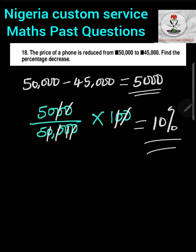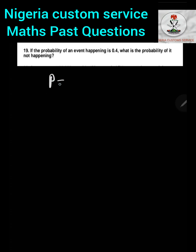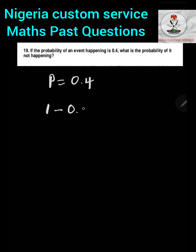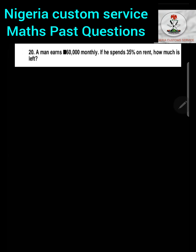Question 19: If the probability of an event happening is 0.4, what is the probability of it not happening? Recall that probability of failure equals 1 minus probability of success. The probability the event will happen is 0.4, so the probability of it not happening is 1 minus 0.4, which equals 0.6, or 60 percent.